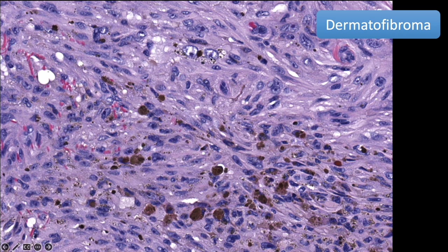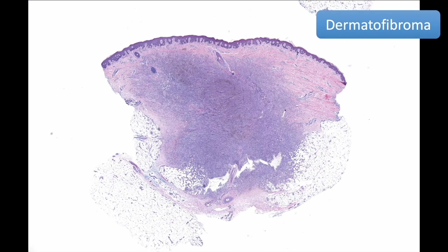In another area of the same lesion we see hemosiderin and very plump, juicy, 'chubby' cells — in Quebec I learned the French word 'joufflu,' meaning chubby, which I thought was perfect for these cells. These big plump cells right here are not the cells of DFSP. DFSP rarely can have pigment, but that pigment is melanin, referring to the Bednar tumor variant. In a dermatofibroma you're going to see hemosiderin.